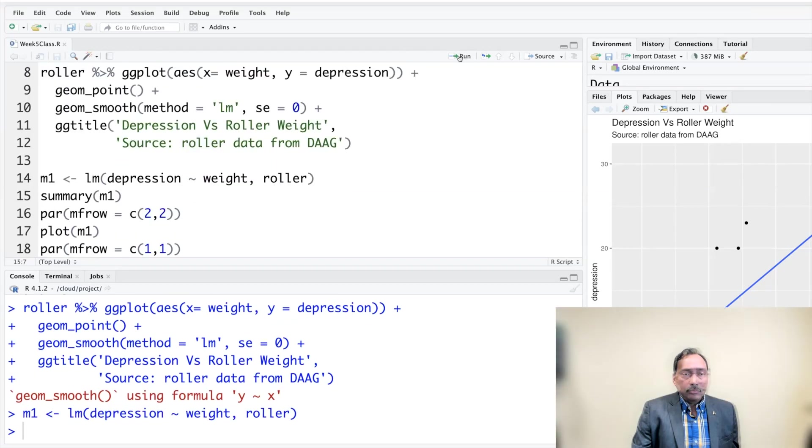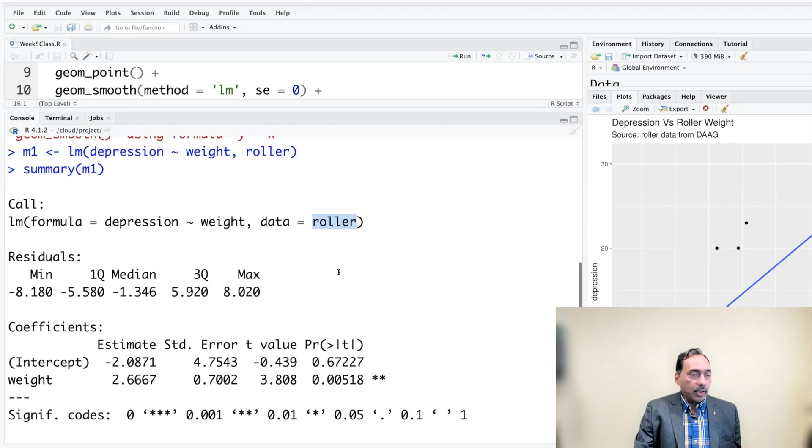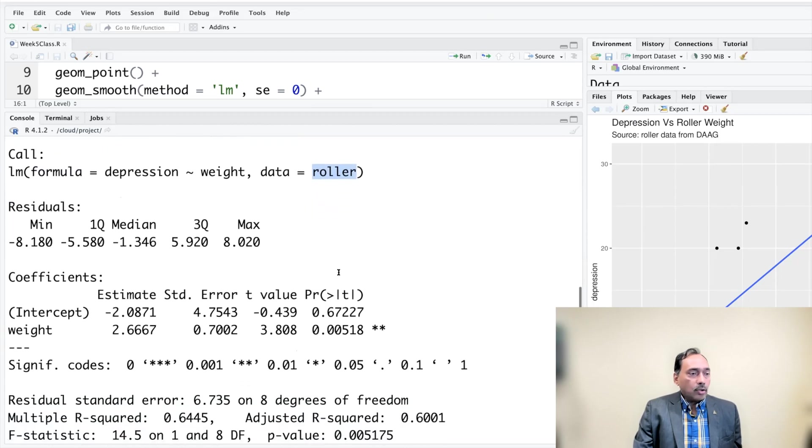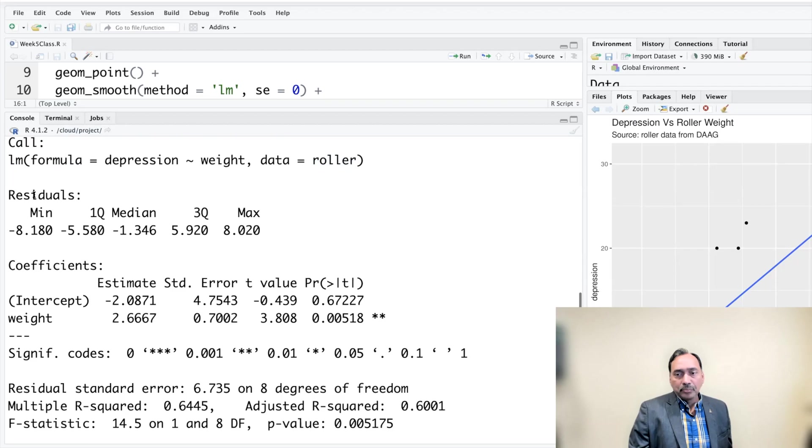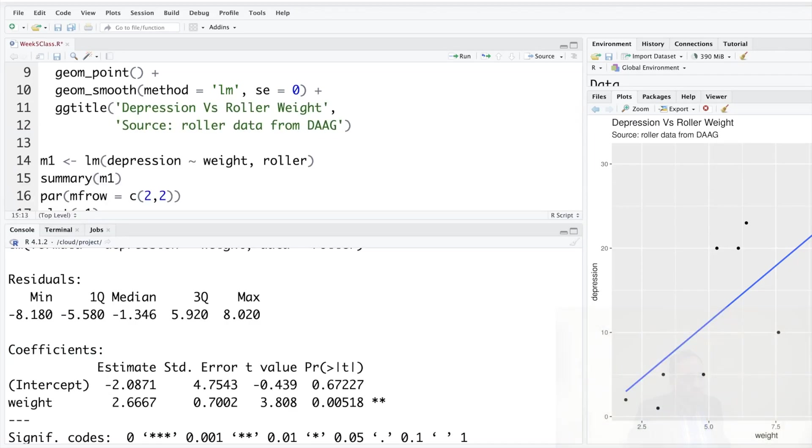Summary M1 tells us that this is a linear model and the formula used is depression versus weight. Data is a roller and so on. It also calculates residuals or errors, the difference between Y and predicted values. Then it gives us information about the coefficients.